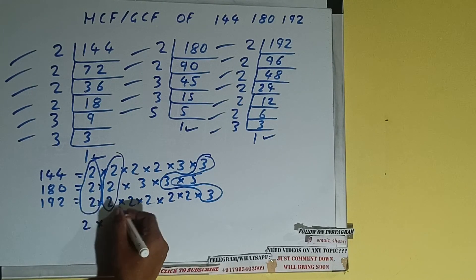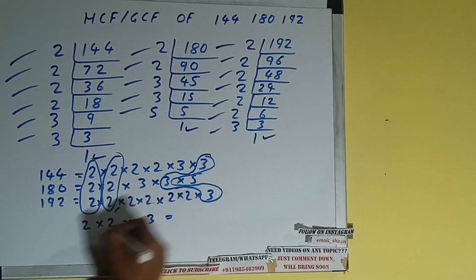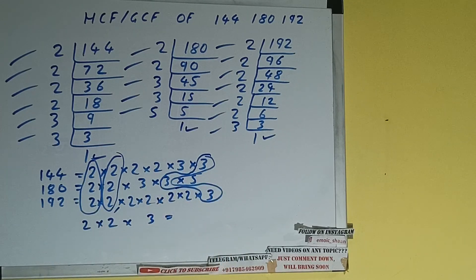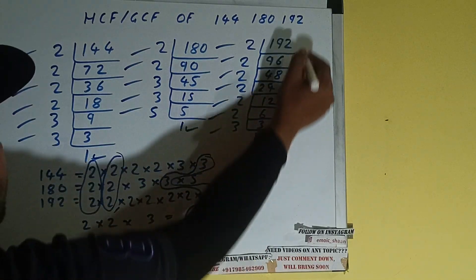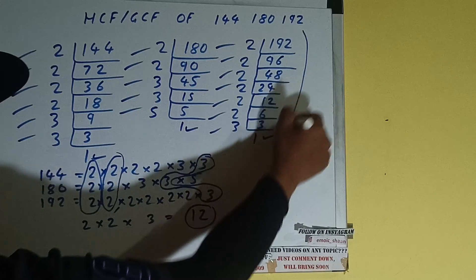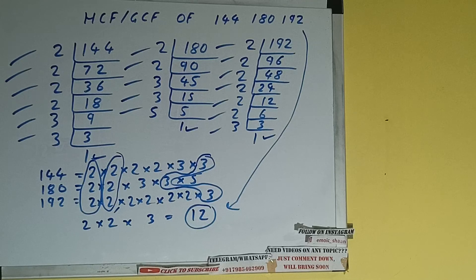Remember, it should be common among all three. We don't have anything extra in common among all three, so what we have is: two 2s in common and one 3 in common. Multiplying them: 2 × 2 = 4, and 4 × 3 = 12. So the answer is 12 — the HCF or GCF of 144, 180, and 192 is 12. If you found the video helpful, please hit the like button, consider subscribing, and thanks for watching.